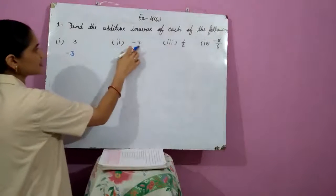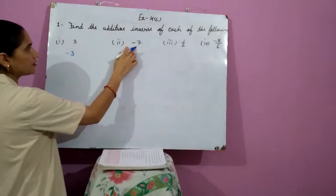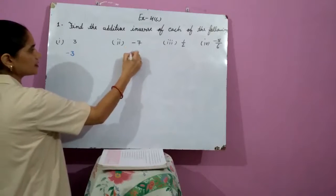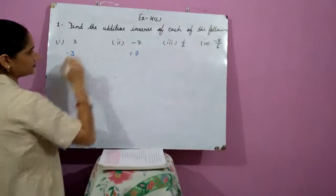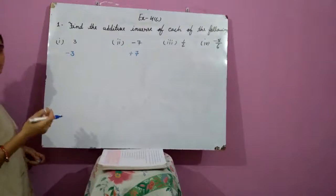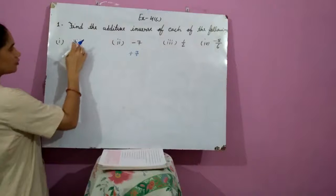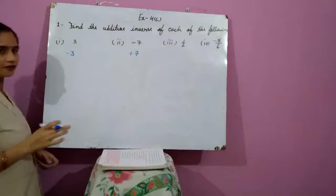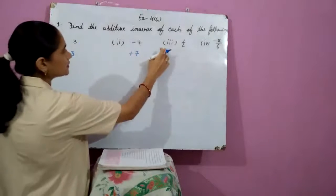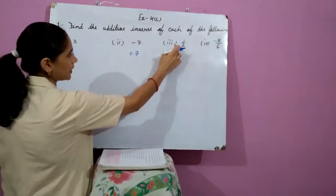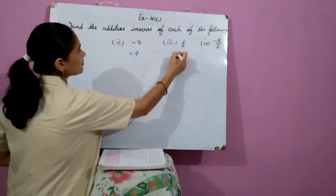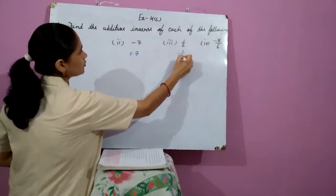Come to the second part: minus 7. The additive inverse of minus 7 is plus 7. In other words, if we add both of these numbers, the result will be 0. And the third is 1 upon 2. It is also having a positive sign, and the additive inverse will be minus 1 upon 2.